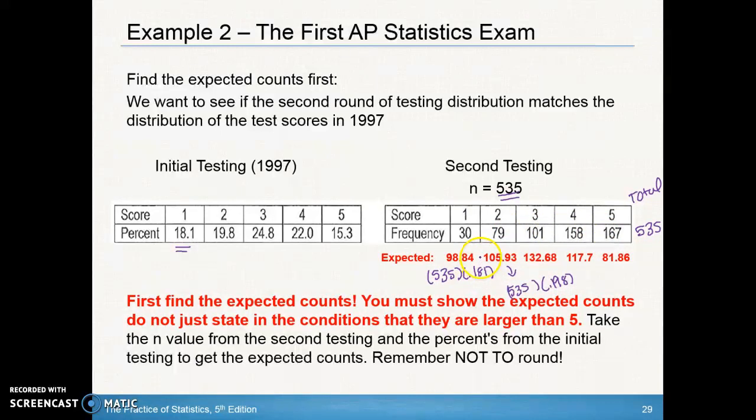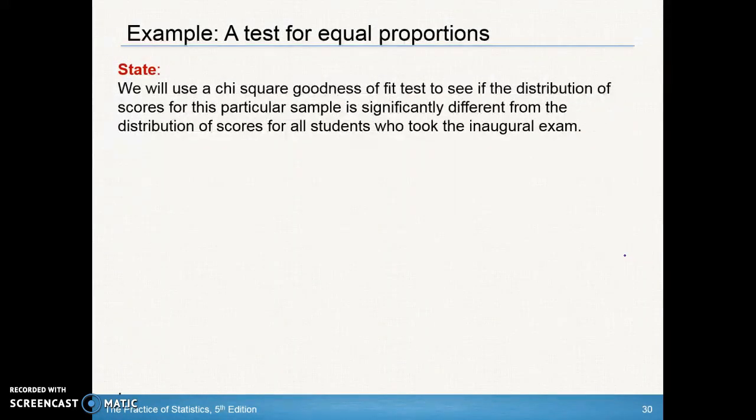So now we see our expected counts of how many students should have gotten a 1, a 2, a 3, a 4, or a 5 if the distributions matched. Make sure that you're showing them and make sure that you do not round. It's very important that you leave it as decimals because once you add these up, they should also give you 535. And we're doing the expected counts to make sure that they're all larger than 5. So let's go ahead and run our test now that we've done our expected counts.